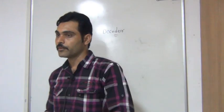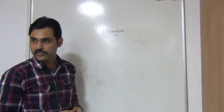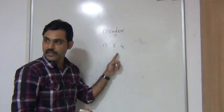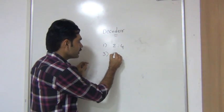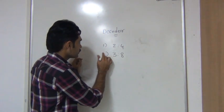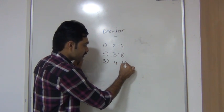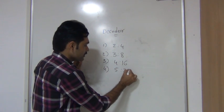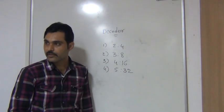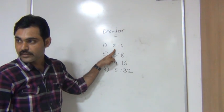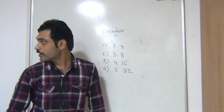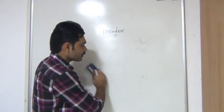Different types of decoders are available. Decoders are available as 2-to-4 decoder, meaning 2 inputs and 4 outputs. A 3-to-8 decoder is available and a 4-to-16 decoder is available. If you take 5 inputs, a 5-to-32 decoder is available. So however many bits you are taking on the input side, on the output side you will get 2 to the power of that number of inputs. I will start with the simple 2-to-4 decoder.